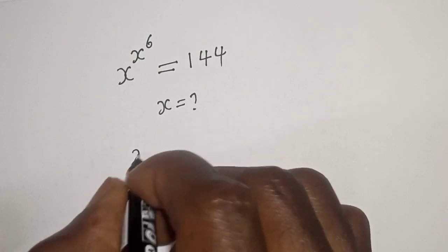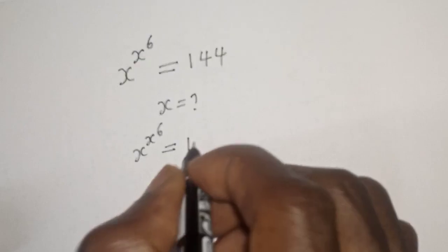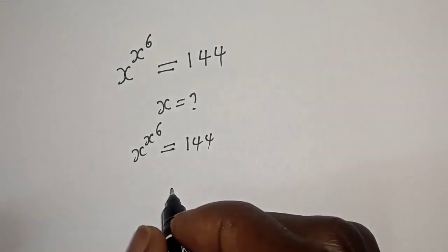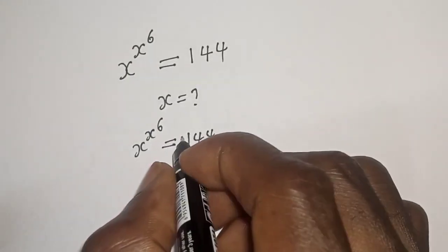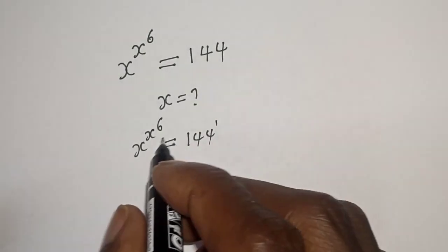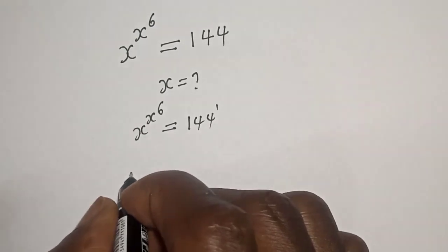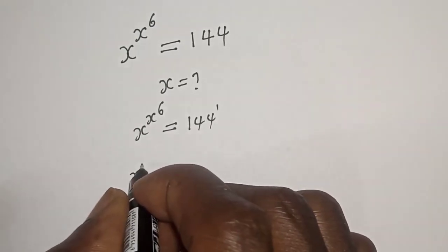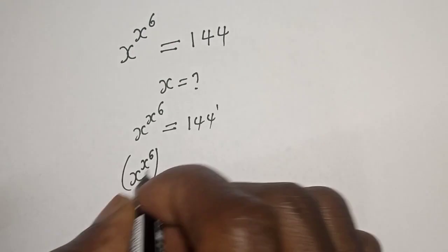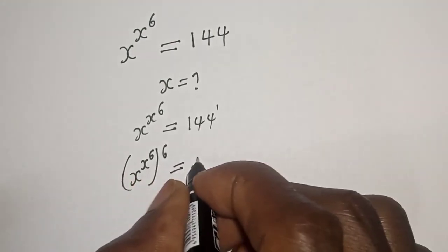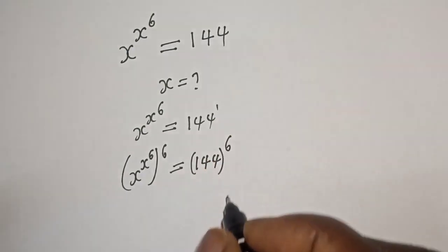We have s raised to power s raised to power 6, is equal to 144. This is also to the power of 1. Let's multiply the exponent of both sides by 6. s raised to power s raised to power 6, to the power of 6, is equal to 144 to the power of 6.